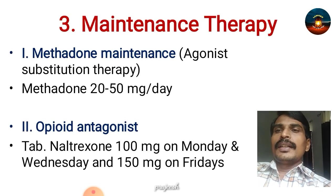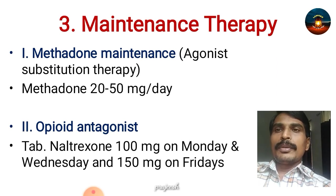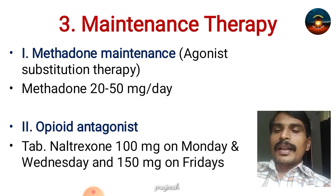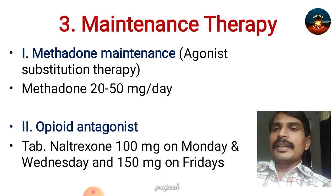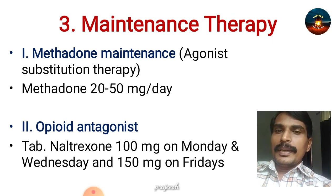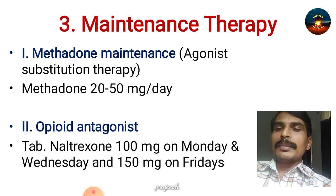The third important point is maintenance therapy — that is methadone maintenance, or agonist substitution therapy. A drug causing less dependence, that is methadone, is substituted for opioids. Methadone 20 to 50 mg per day is given. The opioid antagonist naltrexone is given as 100 mg on Monday and Wednesday and 150 mg on Fridays.